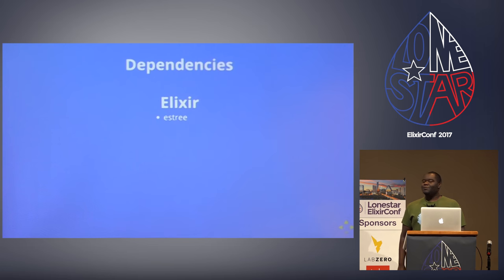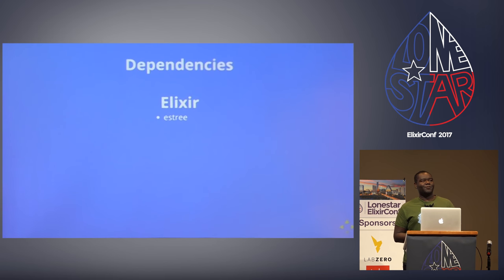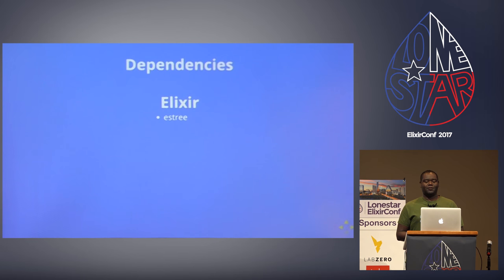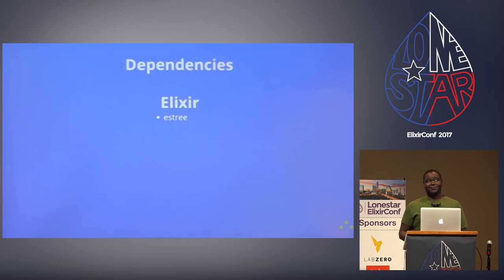There are a couple of projects created strictly to facilitate ElixirScript. One is the ES3 project — ES3 is actually a JavaScript spec based off the SpiderMonkey AST, which most JavaScript AST tools are based on. Esprima adheres to it, and Babel uses a derivative of it. It's up to date as of ES2017, so the latest changes — async and await — are supported.